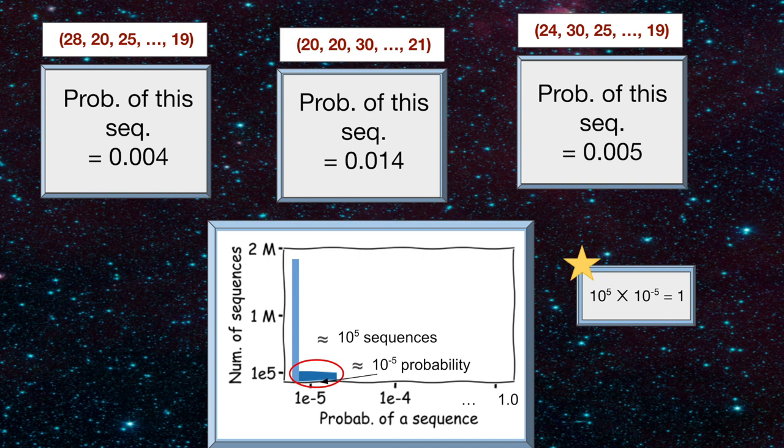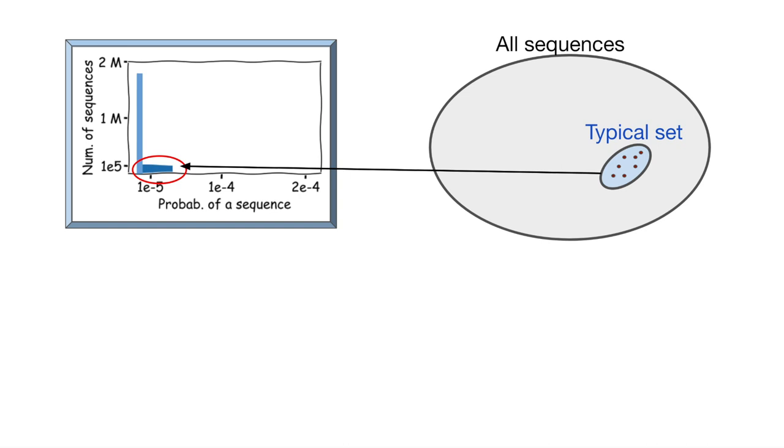But they each have probability approximately 1 over 10 to the 5. So this subset holds almost all the probability. That collection of sequences is precisely the typical set.